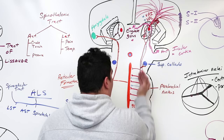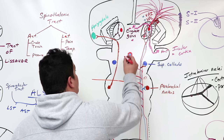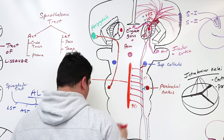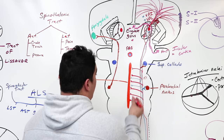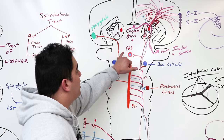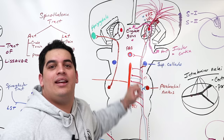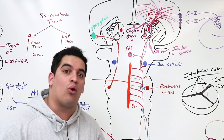There's another structure the anterolateral system projects to: the periaqueductal gray matter (PAG) — a piece of gray matter wrapping around the cerebral aqueduct in the midbrain. Spinal mesencephalic fibers give off collaterals to the PAG. This is important because the PAG controls descending pain modulation pathways — it has descending fibers that can release norepinephrine and serotonin to modulate pain by releasing enkephalins, endorphins, and dynorphins. We'll talk about that in another video.